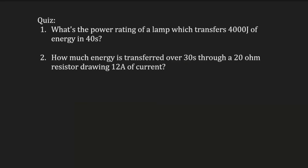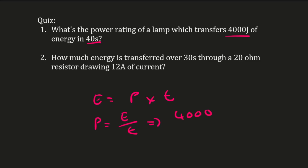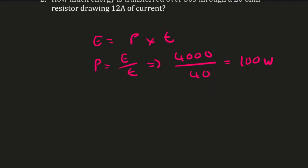Question 1: What's the power rating of a lamp that transfers 4,000 joules of energy over 40 seconds? Using E = Pt, we rearrange to get P = E/t. So: 4,000 joules ÷ 40 seconds = 100 watts. That's the power rating for question one.